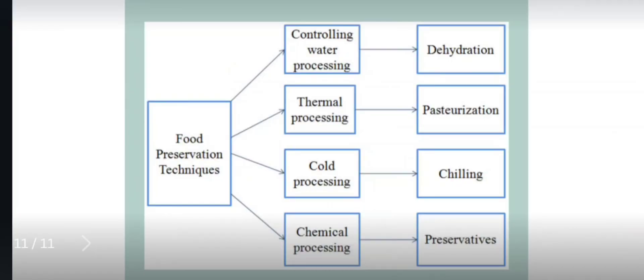In order to control these pathogenic or spoiling microorganisms, there are various techniques in practice — for example, food preservation techniques such as controlling water content through dehydration. Once there is a dehydration process, the water activity gets lower, which results in prevention of food spoilage. Further, thermal processing, especially pasteurization, is used.